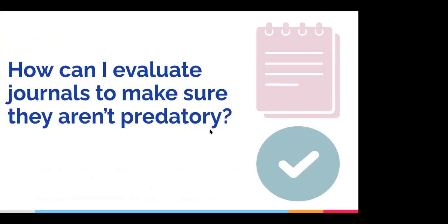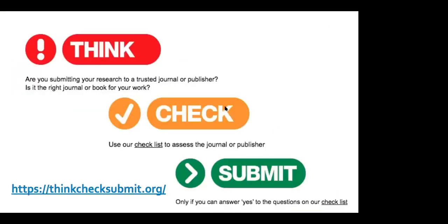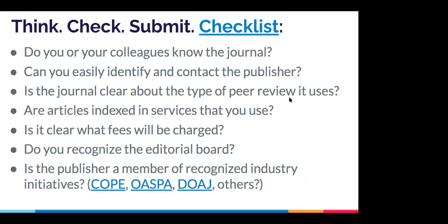How can we evaluate journals to make sure they aren't predatory? Not all of them are as blatantly bad as the examples we just saw. One site I recommend a lot is called Think, Check, Submit. They offer a checklist to walk through things to consider about a journal and its practices. One thing that can make this a little difficult is that sometimes it's not always clear — some journals are in gray areas where some things about them are good, some things are unclear, and there may be positives and negatives about any given journal.